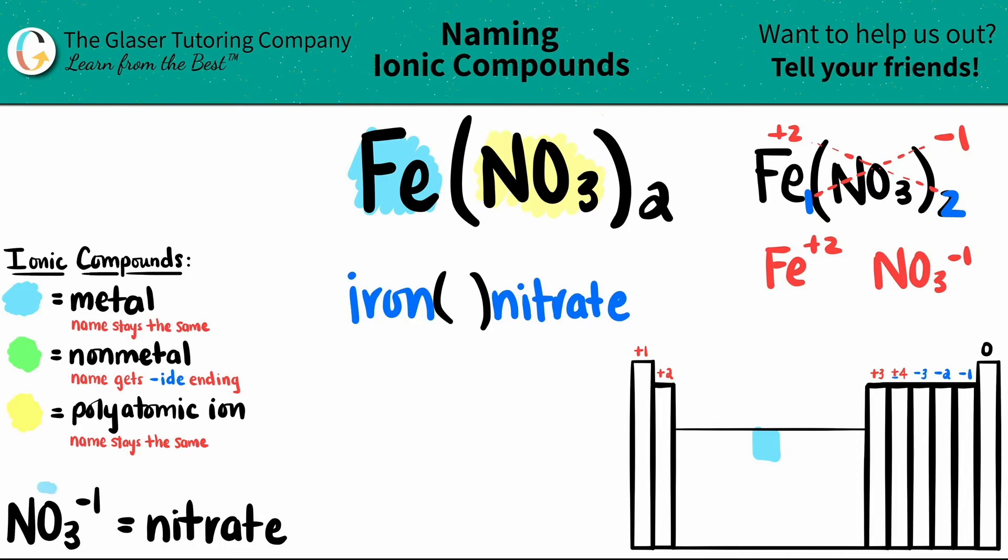So I have Fe+2 and NO3-1. Since we know that nitrate is always a negative one charge, this checks out. And if this checks out, that means this checks out. So the charge of the iron is a plus two, so the Roman numeral is going to be a two. And you now have your answer.